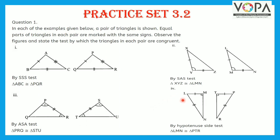Fourth, triangle LMN and triangle PQR are right-angled triangles. Here, hypotenuse LN of triangle LMN is congruent to hypotenuse PR of triangle PQR, and side LM is congruent to side PQ. Therefore, triangle LMN is congruent to triangle PQR by hypotenuse-side test.